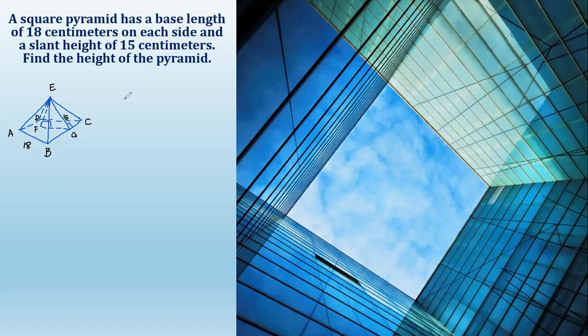So first, identify the slant height. EG, which is our slant height, EG squared equals FG, which is half of the base length 18, so FG squared plus the height EF squared.